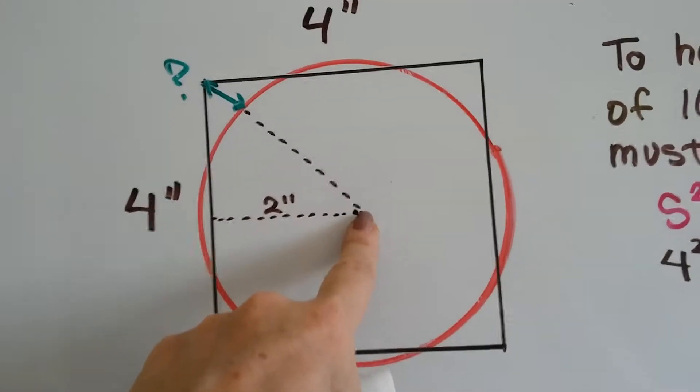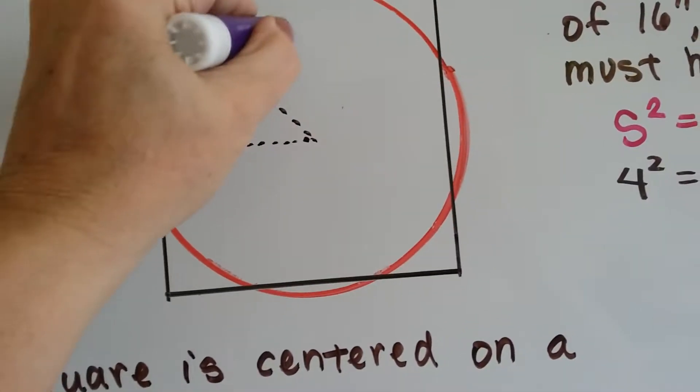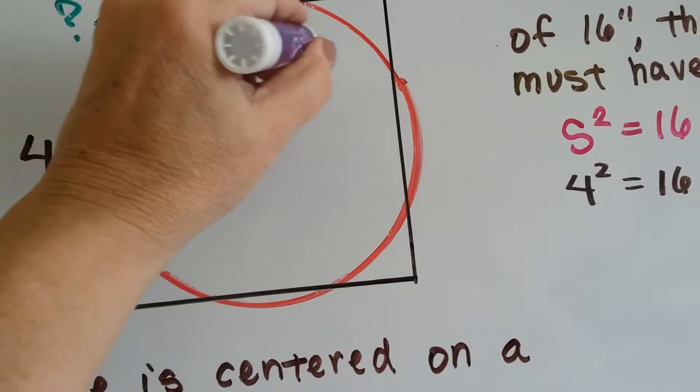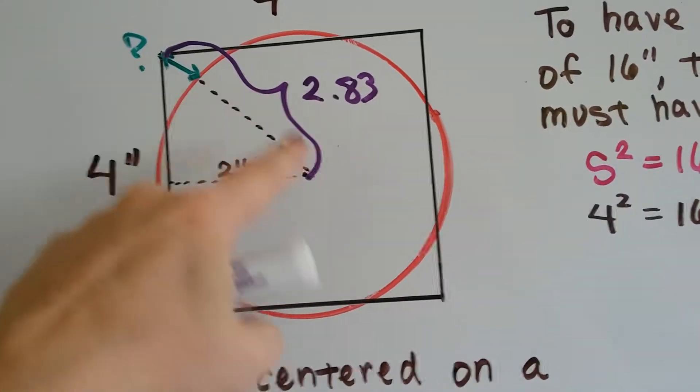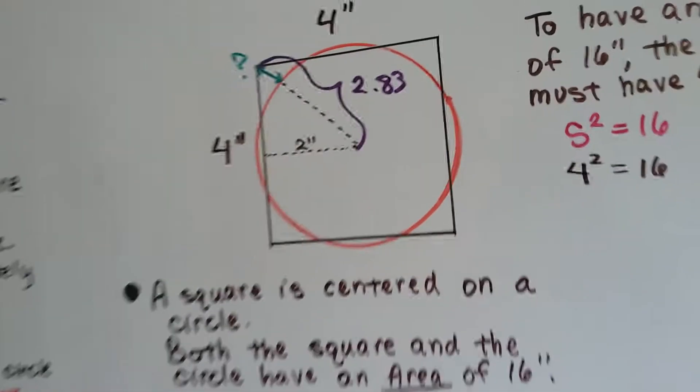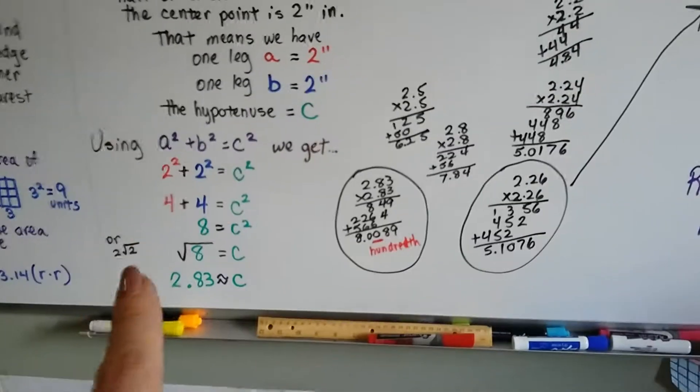So that means from this center point to here, this area is 2.83. From the outside corner to the very center. So now, keep that in mind. We're going to tuck that off on the side.